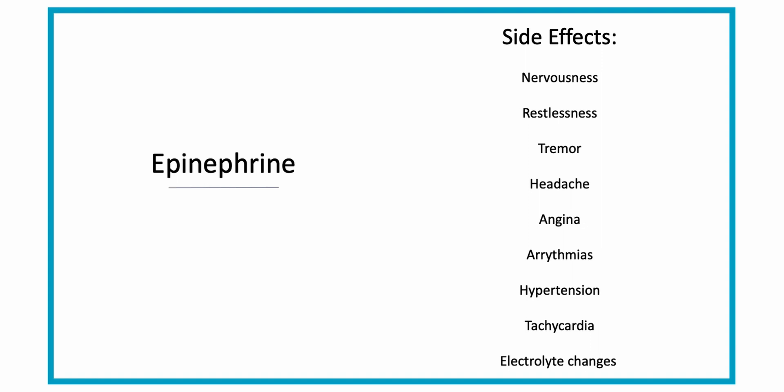Hyperglycemia and GI upset can also happen because the body is in fight-or-flight mode and the GI system is not as active. It can also cause changes in electrolytes, specifically potassium, and hyperglycemia.